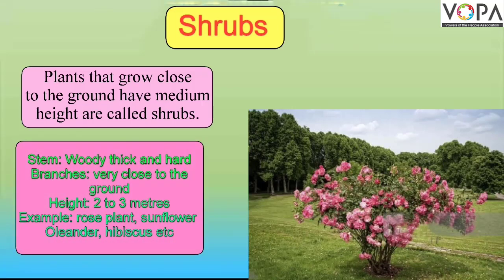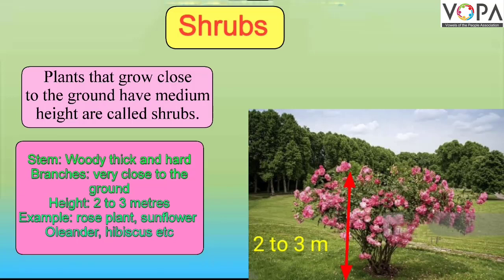Shrubs: Plants that grow close to the ground and have medium height are called shrubs. Shrubs have woody, thick, and hard stems. They give out branches very close to the ground. Shrubs grow up to two to three meters tall. They are shorter and smaller than trees.